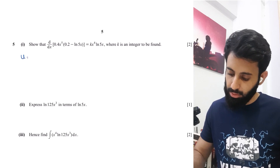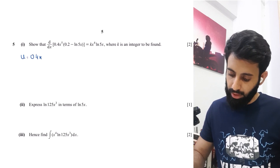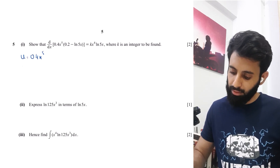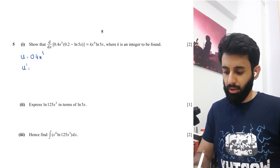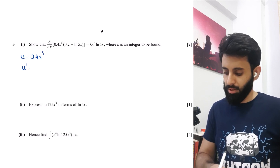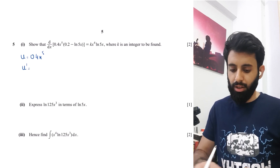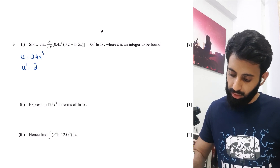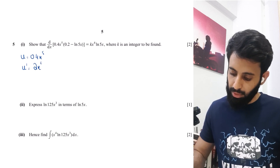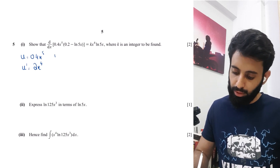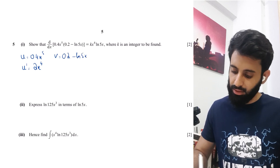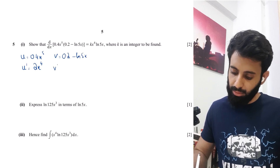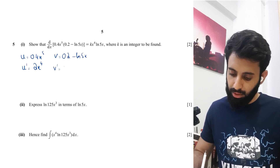Setting up product rule: u = 0.4x^5, so u' = 0.4 times 5, which is 2x^4 — we multiply by 5 and reduce the power by 1. Then v = 0.2 minus ln5x, so now we need v'.